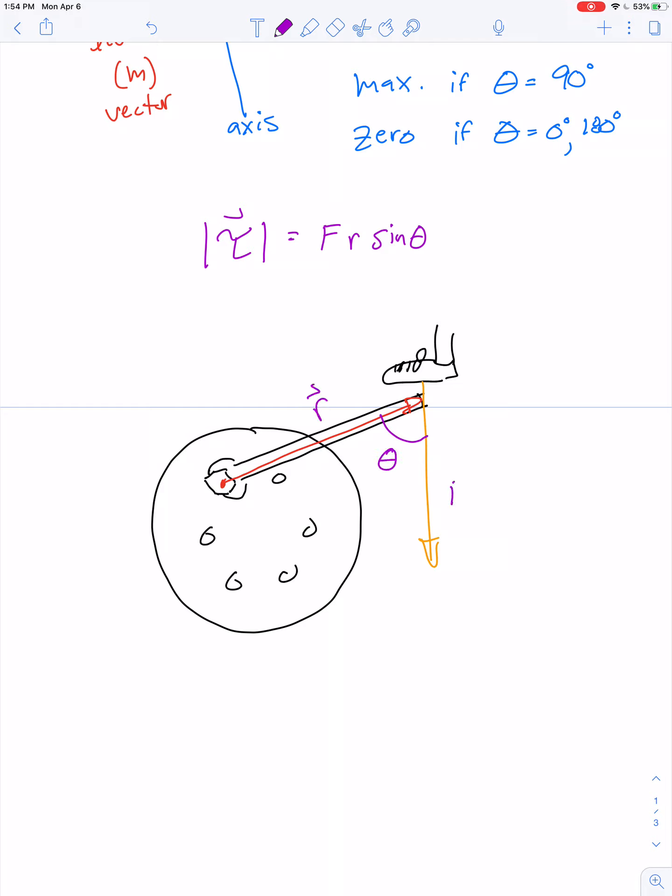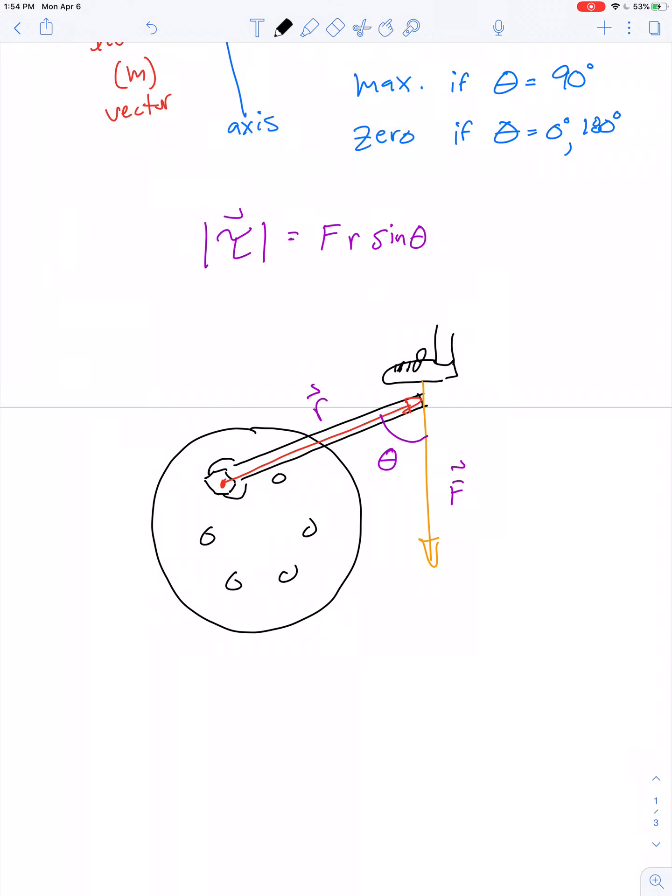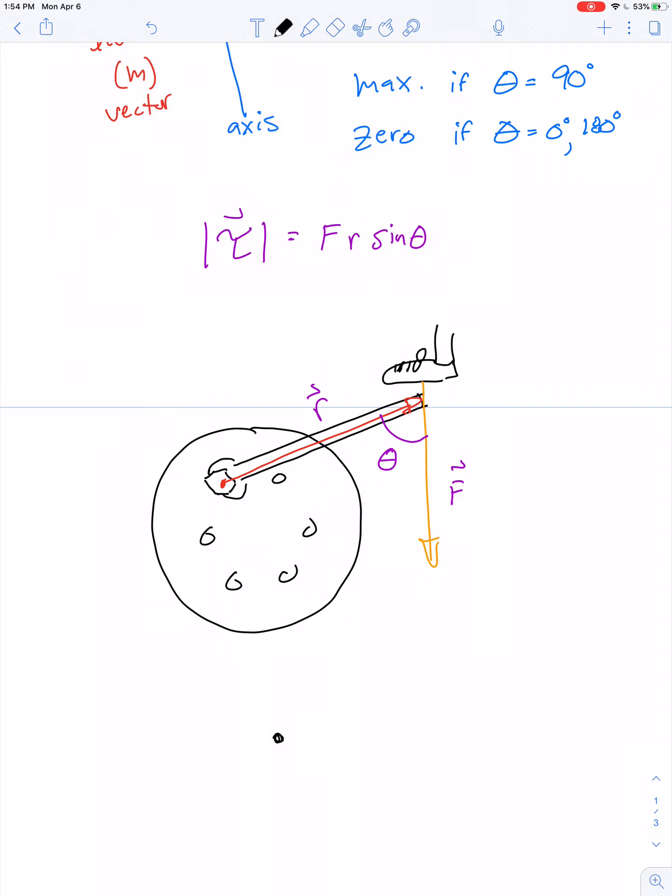There's a vector r, a vector F, and some angle. We can picture this in a simplified way. That dot is the axis of rotation. That line represents our lever arm r. I'm going to make an x at the point where the force is applied and extend my lever arm as an x-axis and make a line perpendicular to that, so we have a y-axis.